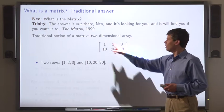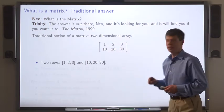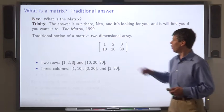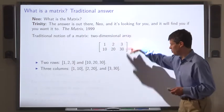This has two rows. The first row is 1, 2, 3, and the second row is 10, 20, 30. It also has columns. So the first column is 1, 10, second column is 2, 20, third column is 3, 30.